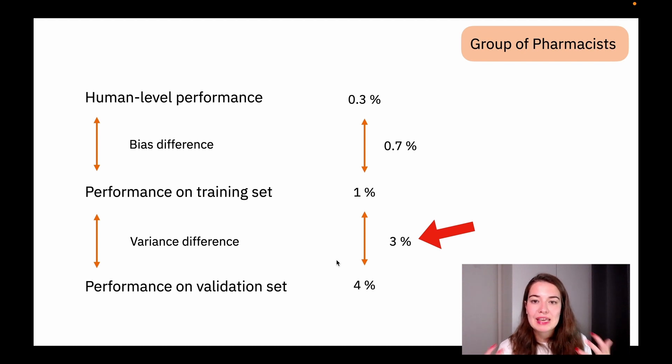So it's quite easy to see that we should actually, we will have more gain to work on the variance difference to improve our model. We will be able to make more progress. Whereas for the bias difference, we are already quite close compared to the variance difference.